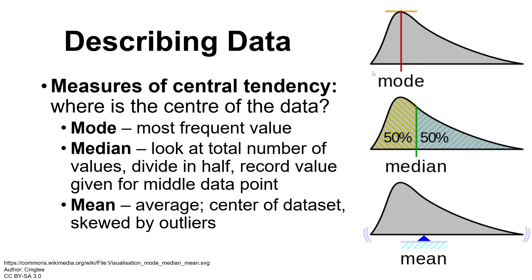Across the bottom we'd have whatever score we're measuring — we've been using height, so this could be shortest to tallest, or it could be something like IQ from lowest to highest. Our mode is where that curve peaks, meaning that's the most people who got a particular score.